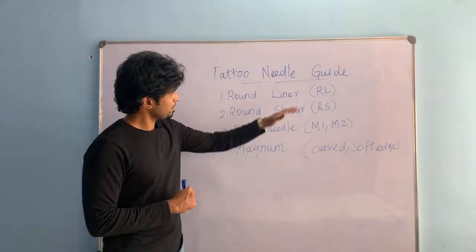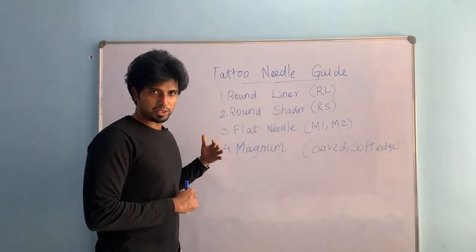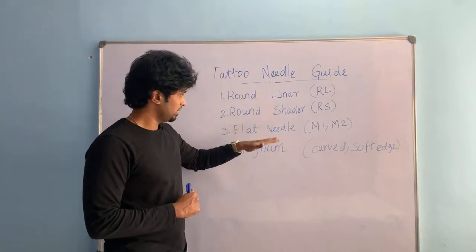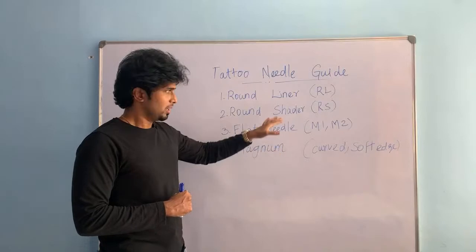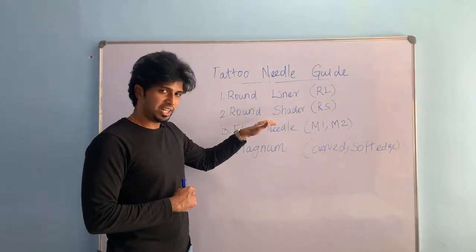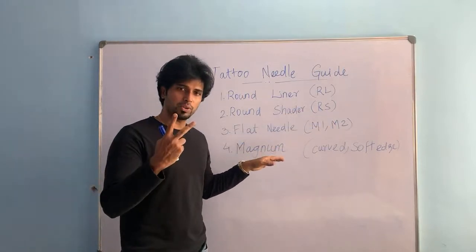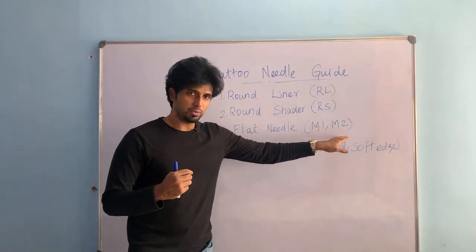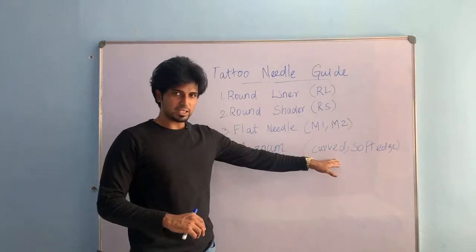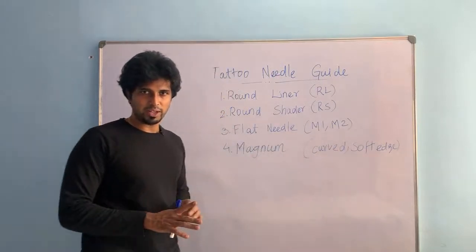Let's get into the video. Tattoo needles — there are four different types of needles available in the market. The first one is round liner, round shader, flat needle, and magnum. Round liner is called RL, round shader is known as RS. For flat needle there are two varieties: M1 and M2. For magnum there is a curved magnum as well as soft edge magnum.